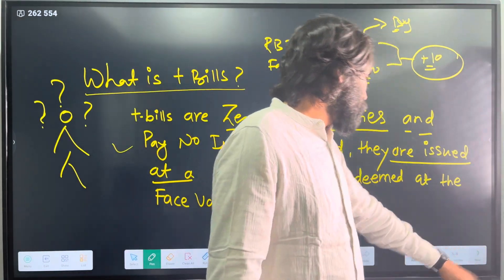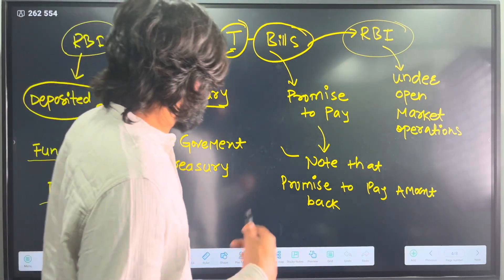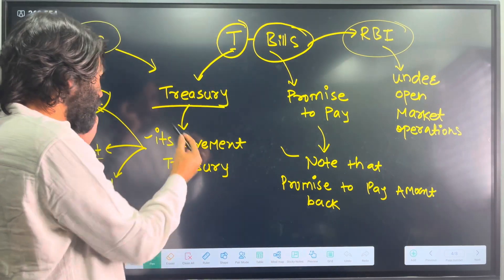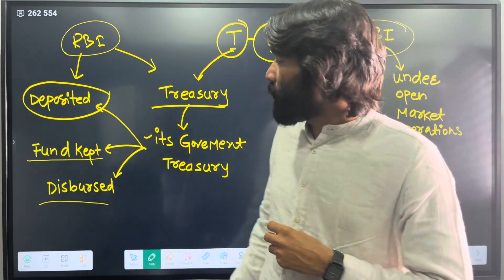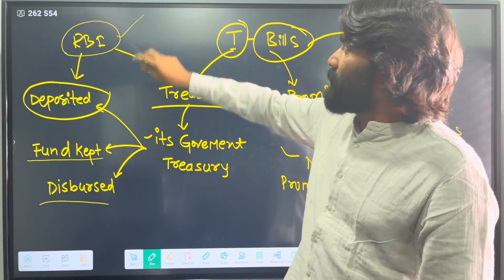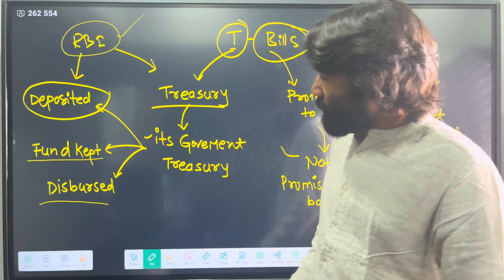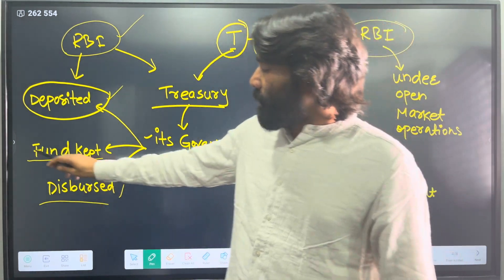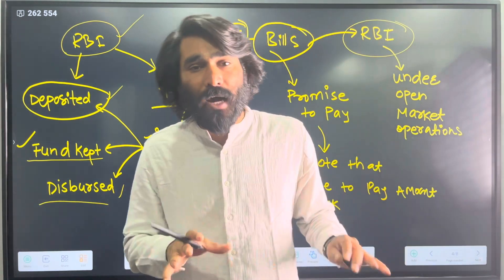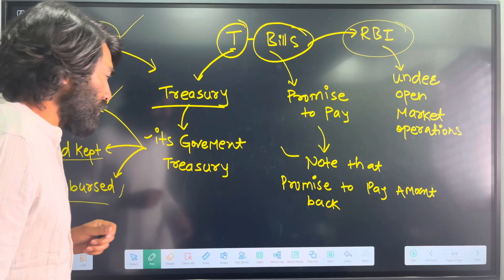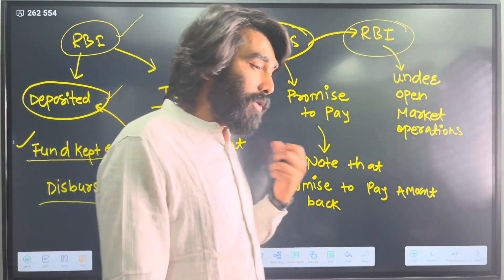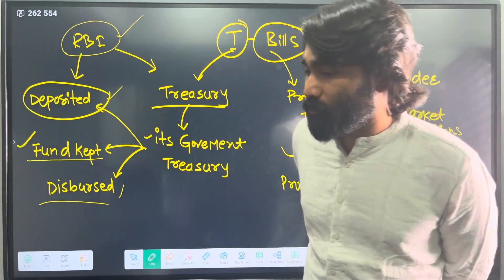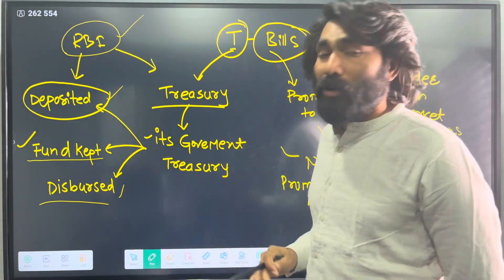Let's decode the word 'treasury.' Treasury means a government fund — essentially a government cash management system. RBI manages the government's cash. There are primarily three functions: deposited amounts, disbursed amounts to different government projects, and funds parked in various government accounts. RBI takes control, monitors, and governs all cash management activities — the entire country's deposit and disbursement activities across different accounts.